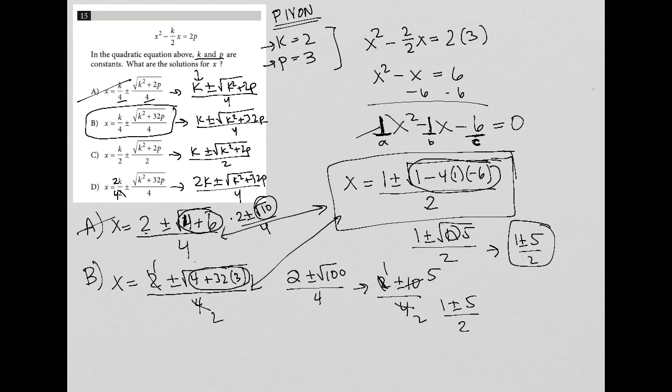And then also technically, whenever I use plug in your own number, I'd like to still try the other values. Again, because of time restrictions, you may not be able to do that on a number 15, but it's still a wise choice whenever you're using plug in your own number that you go and try and say, hey, if I try two and three for k and p and B works, I want to make sure that C and D do not work because if one of those do work, I may need to change my numbers. I may need to choose some different numbers here to figure out which answer is actually the correct answer.